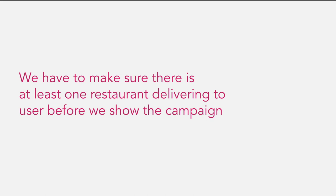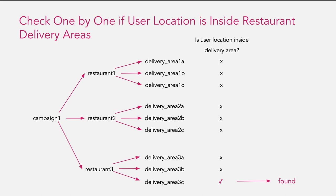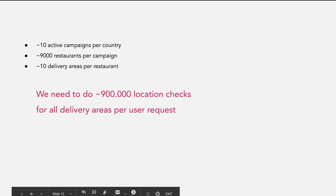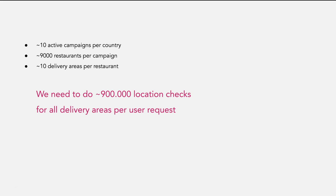The first solution that comes to mind is to check one by one if the user's location is inside a restaurant's delivery areas. For example, with campaign 1 having three restaurants each with three delivery areas, we check delivery areas one by one until we find the user is inside one of them. But we have around 10 active campaigns per country, around 9,000 restaurants per campaign, and around 10 delivery areas per restaurant — so we'd need around 900,000 location checks per user request, which would be very slow.